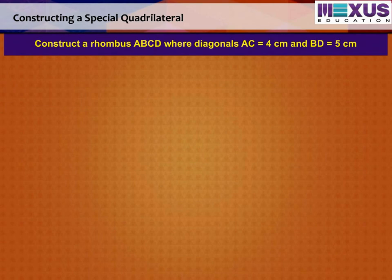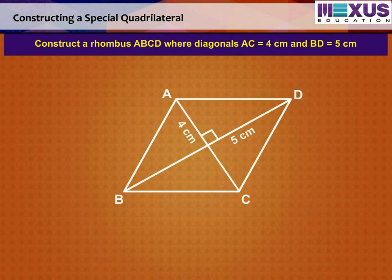Now, construct a rhombus ABCD where diagonals AC is equal to 4 cm and BD equal to 5 cm. Here, measurements of only two diagonals of the rhombus are given.